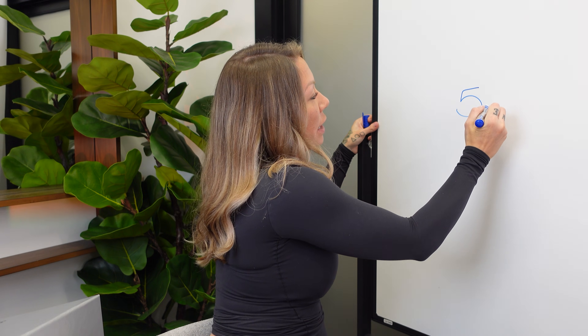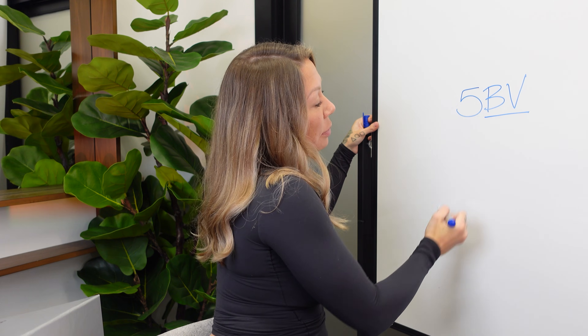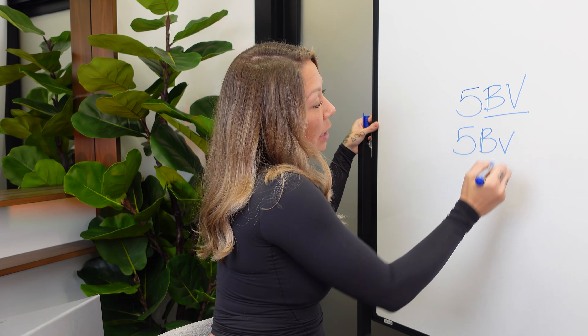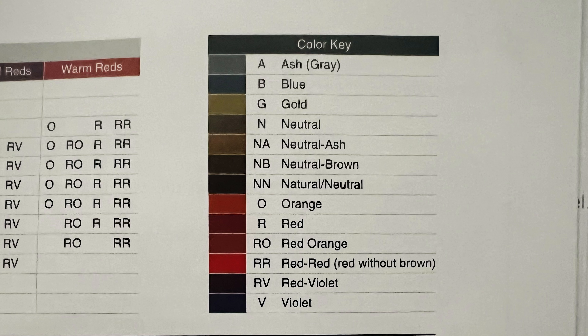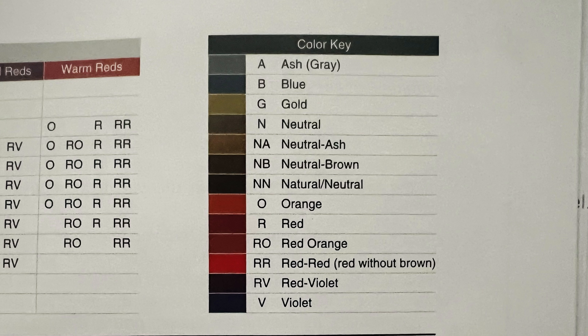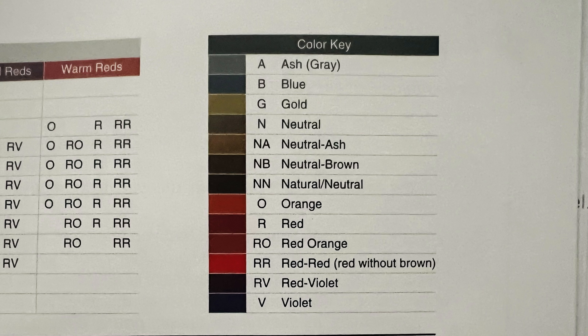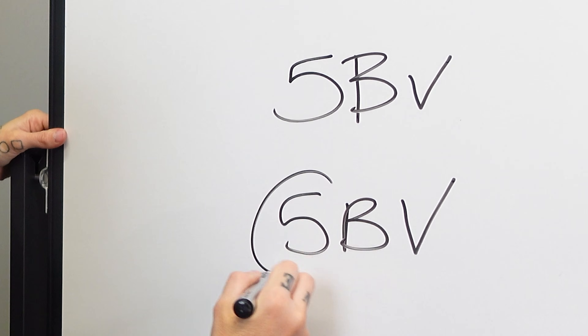Some hair color lines will use all capitalized letters, like 5BV, where the first letter is the dominant tone. On page 615 there's a color key chart as a basic guide: A for ash (gray), B for blue, G for gold, N for neutral or natural, NA for neutral ash, NB for neutral brown, NN for neutral natural double-pigmented (for gray coverage), O for orange, R for red, RO for red-orange, RR for red-red, RV for red-violet, and V for violet. It's generally just the first letter of the word representing the tone. So 5BV would be level five, blue-violet.